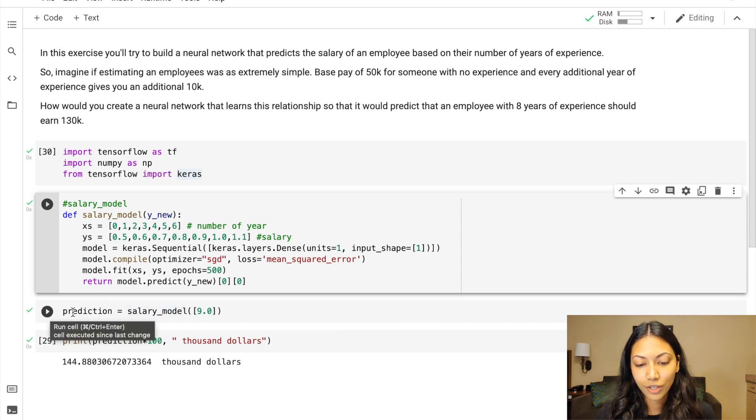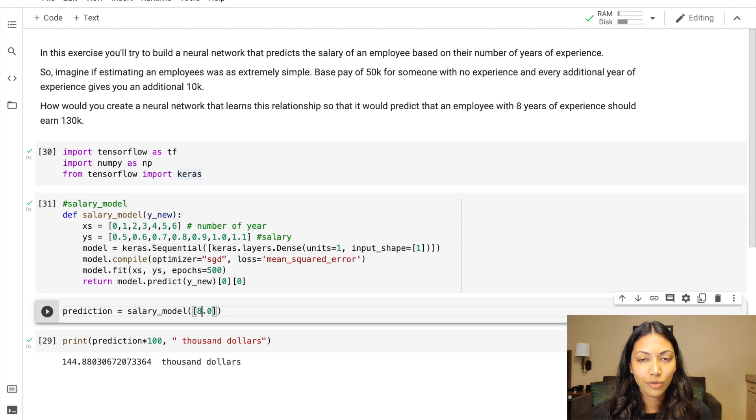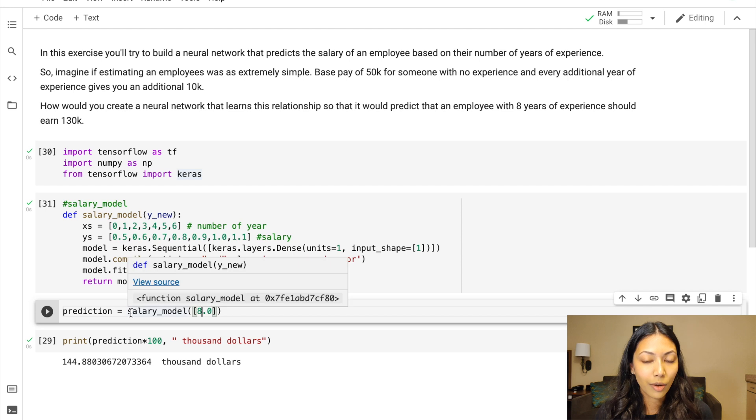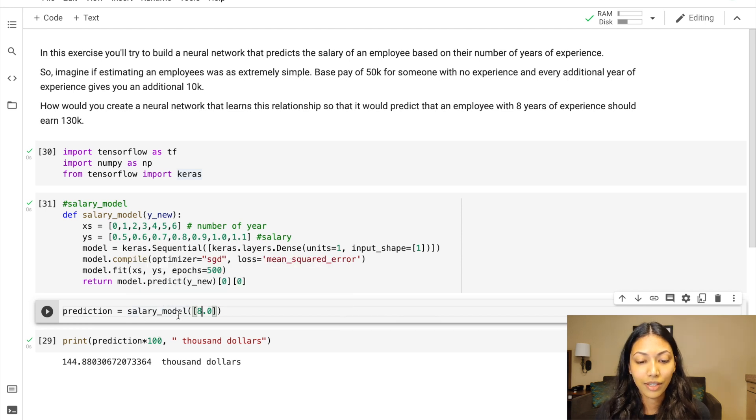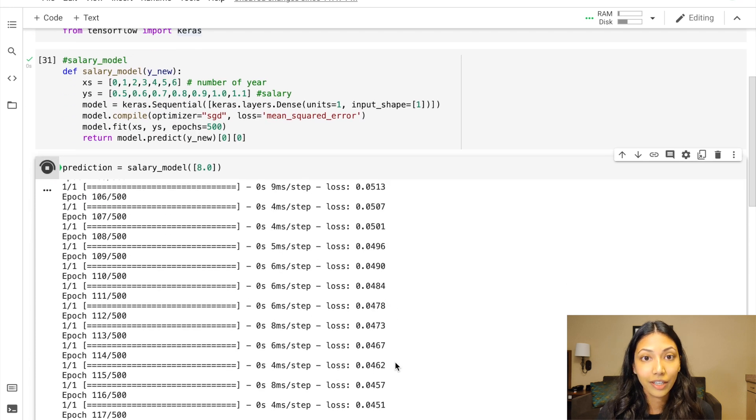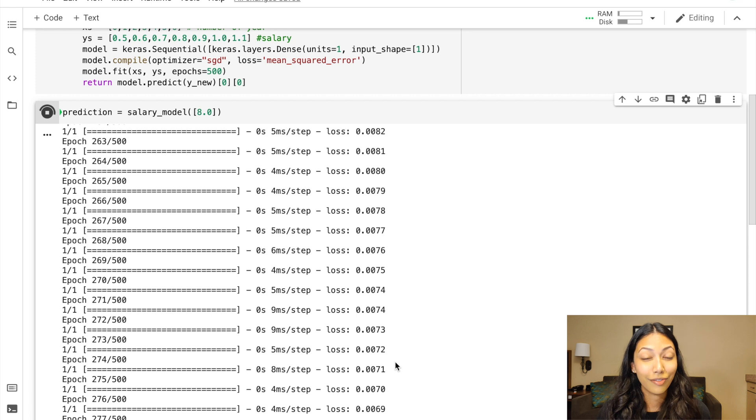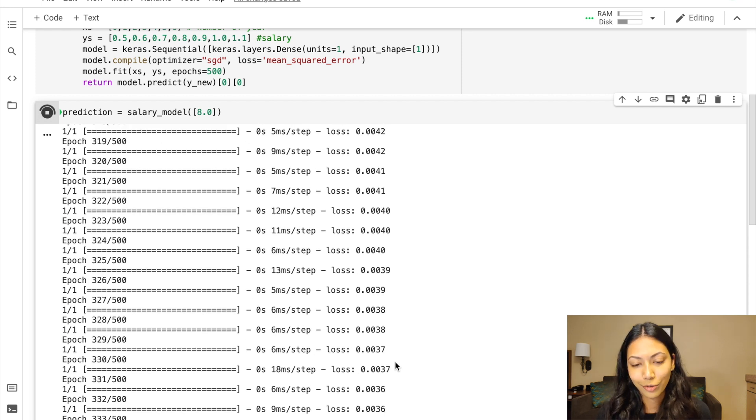Next up is our prediction. So as I was saying, we want to predict what is going to be the salary of an employee with 8 years of experience. So we put in the value 8 and we call our definition that we created earlier, salary_model. So prediction equals salary_model. And this is when our model is actually going to run and train on all of that data that we have entered in the previous block. It's pretty fast because we don't have a very large data set. If we had a very large data set, each epoch would take a much longer time. So obviously, you can imagine that 500 epochs is going to take a tremendously large amount of time.